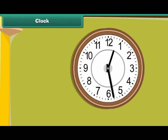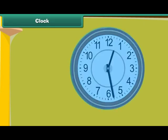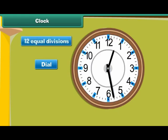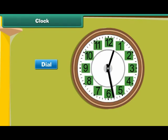Look at this clock. The visible side of the clock is known as its face. It has a dial. The dial has 12 equal divisions. These divisions are numbered from 1 to 12.